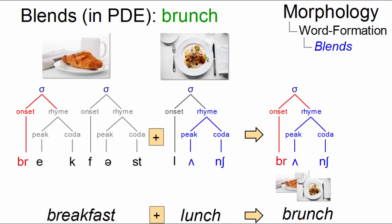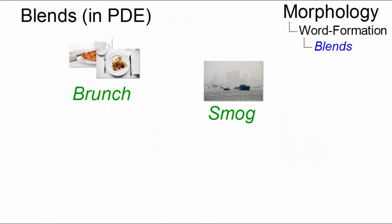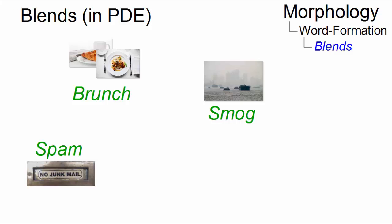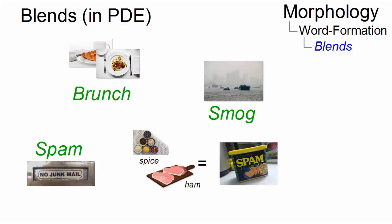Today, many ordinary words are blends. In fact, some of them — for example, spam — are so well installed in the lexicon that speakers are unaware of the fact that they are really hybrid words rather than simple roots. In this case, a blend from spice and ham.